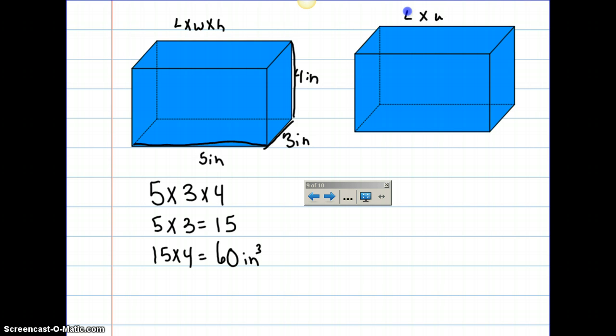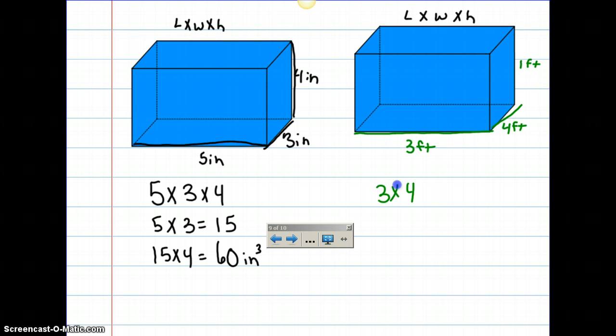You're going to write length times width times height. On this one, I'm going to make this one three feet by four feet by one foot. So again, the length is three, the width is four, and the height is one. So I'm going to break it down three times four, which that is 12, and 12 times one. And that is going to be 12. I'm going to write feet, and it's going to be cubed.